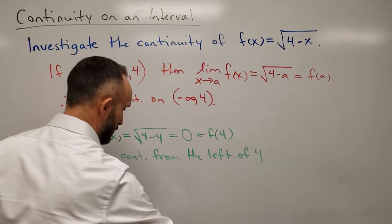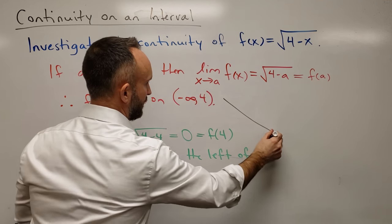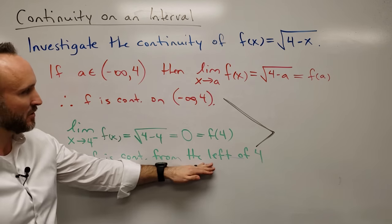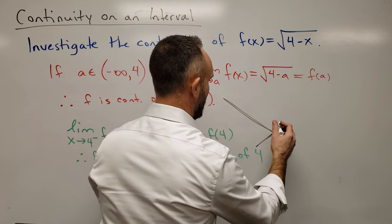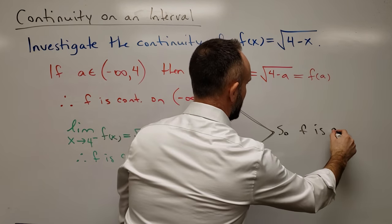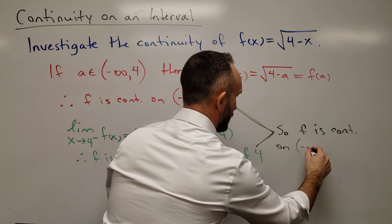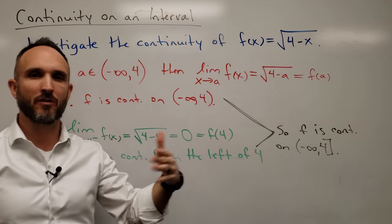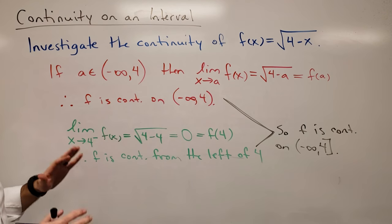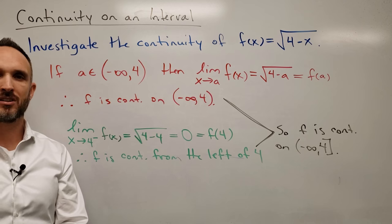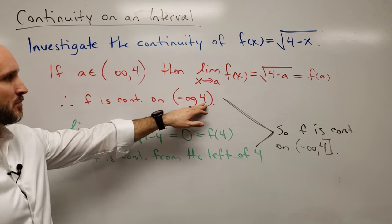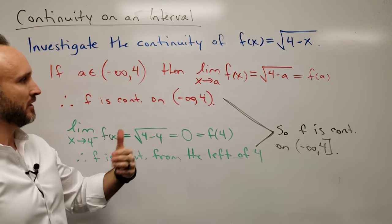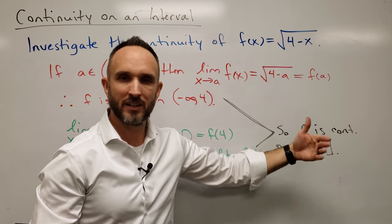Putting those two conclusions together — f is continuous on the open interval from negative infinity to 4, and f is continuous from the left of 4 — we can say finally that f is continuous on the half-closed interval from negative infinity to 4, with a bracket at 4. That's a discussion of continuity of a function on an interval, covering open intervals and continuity from the left or right of an endpoint based on what type of endpoint it is.